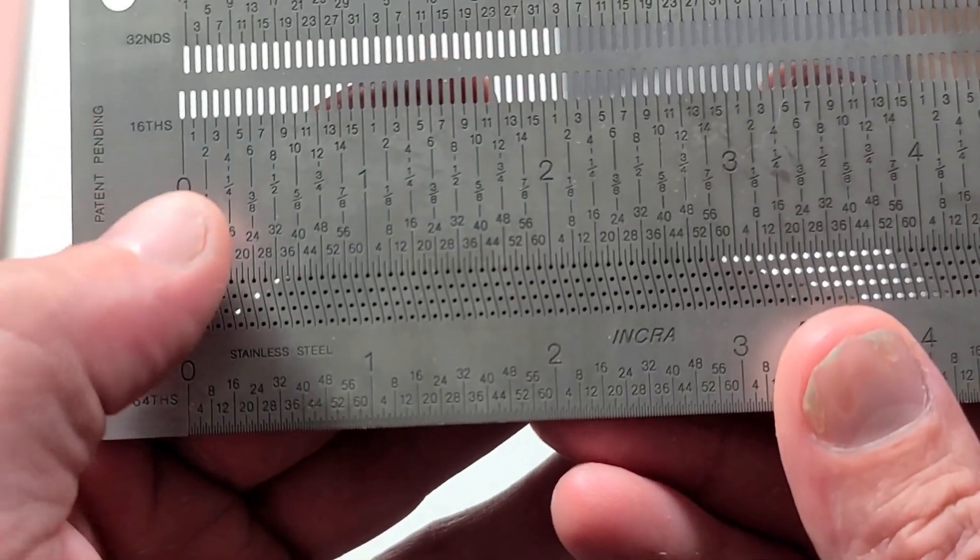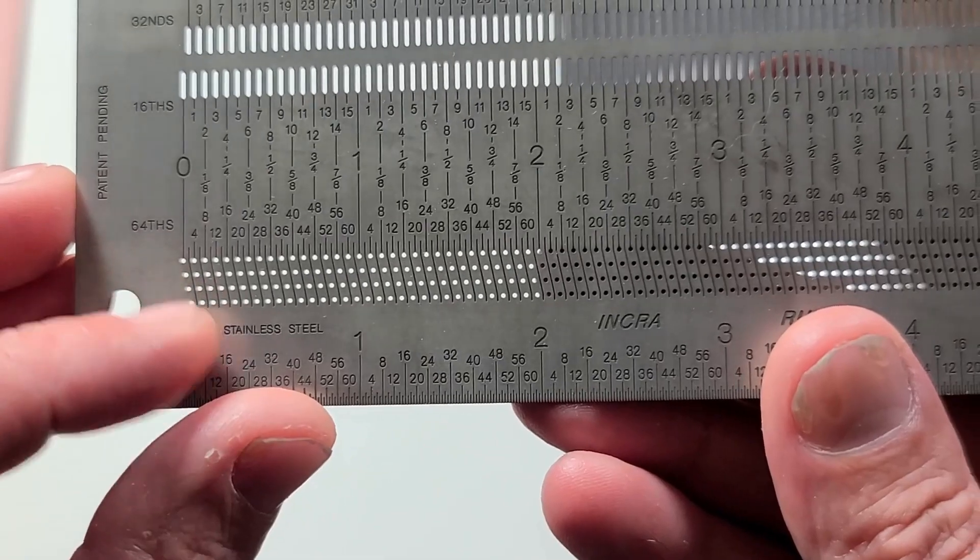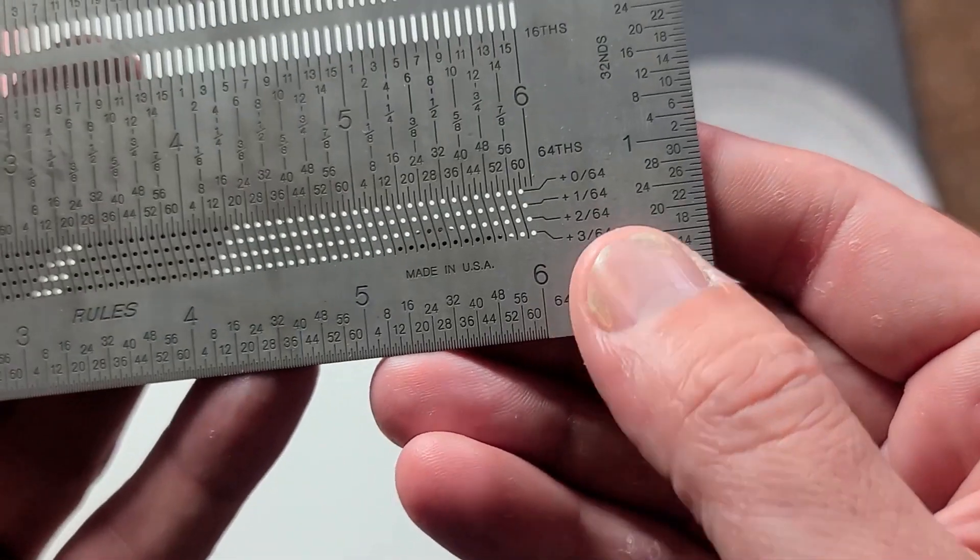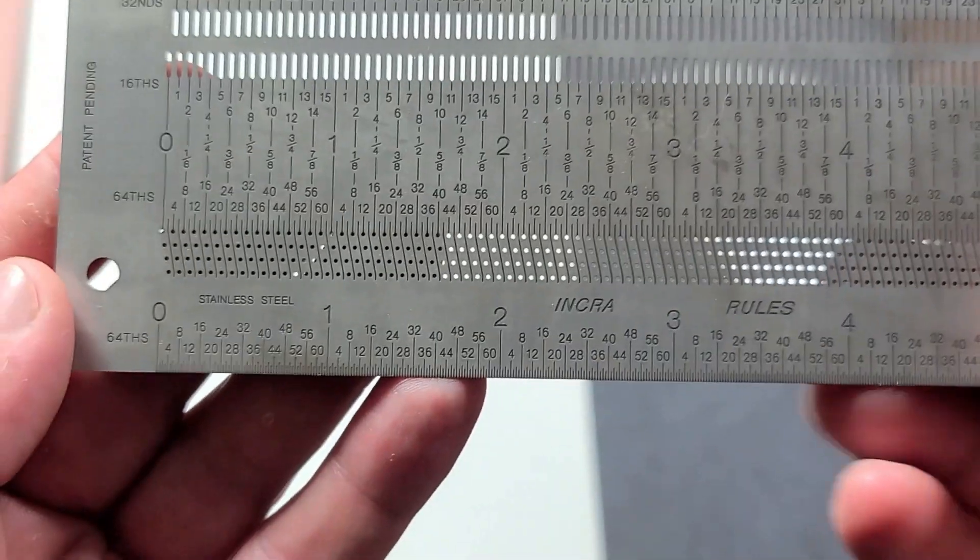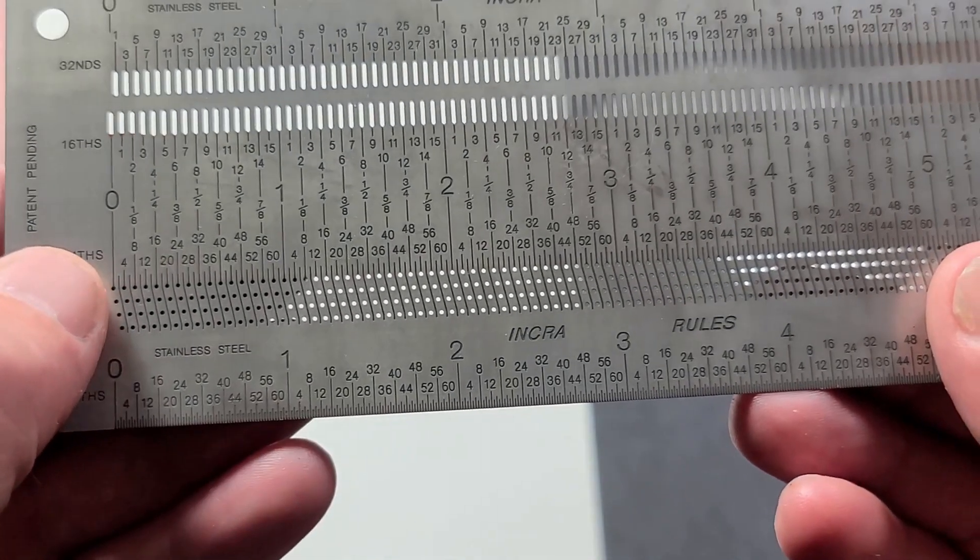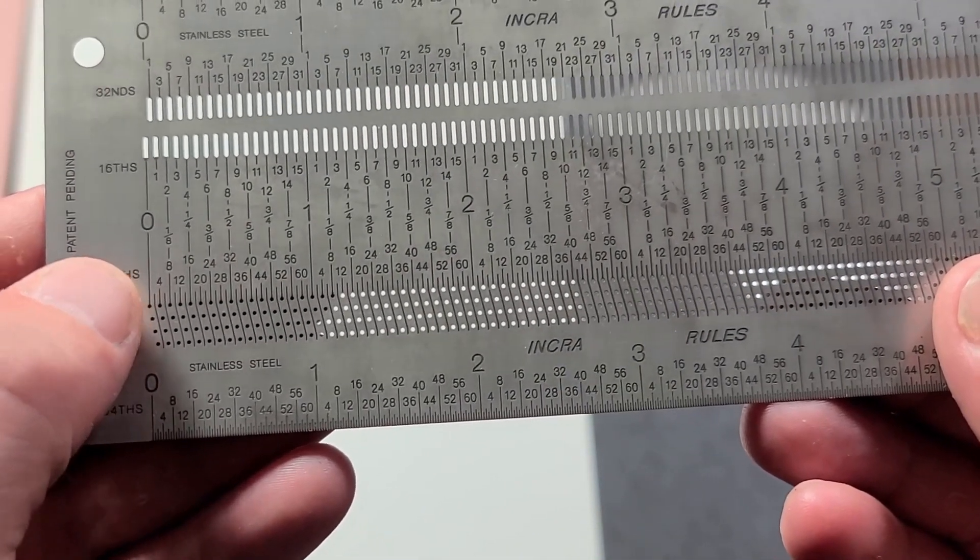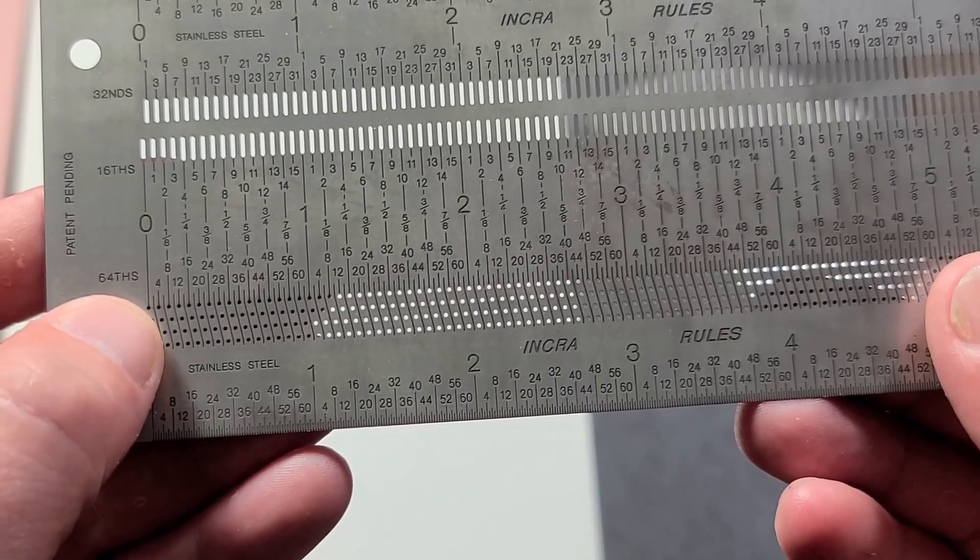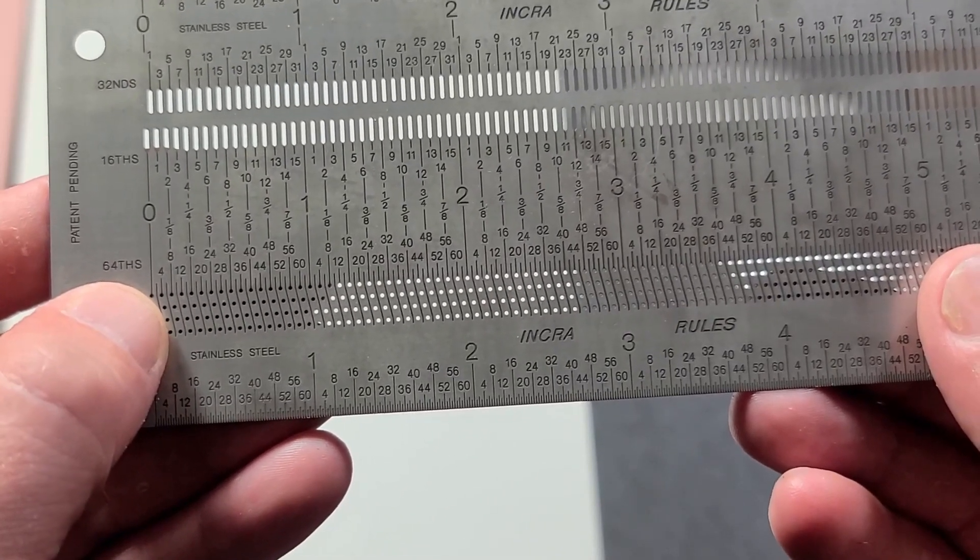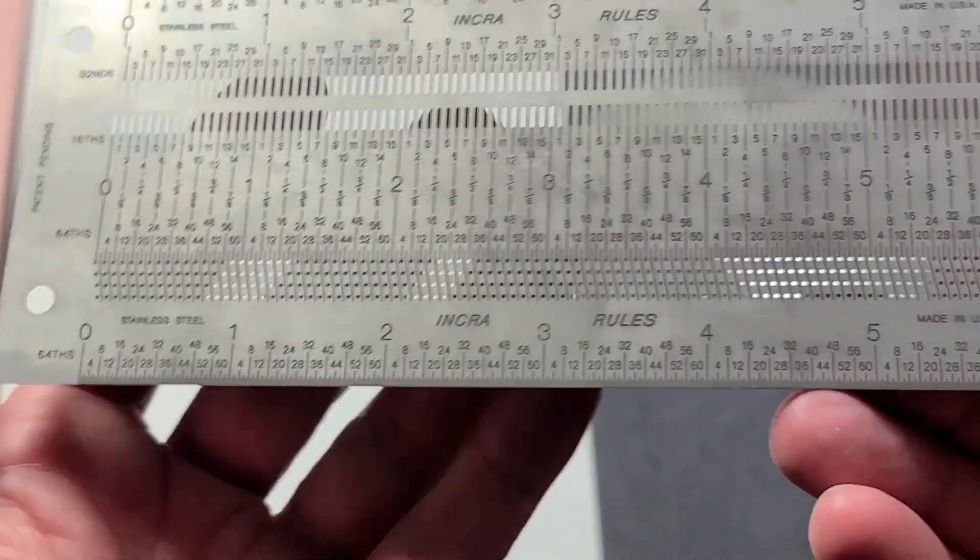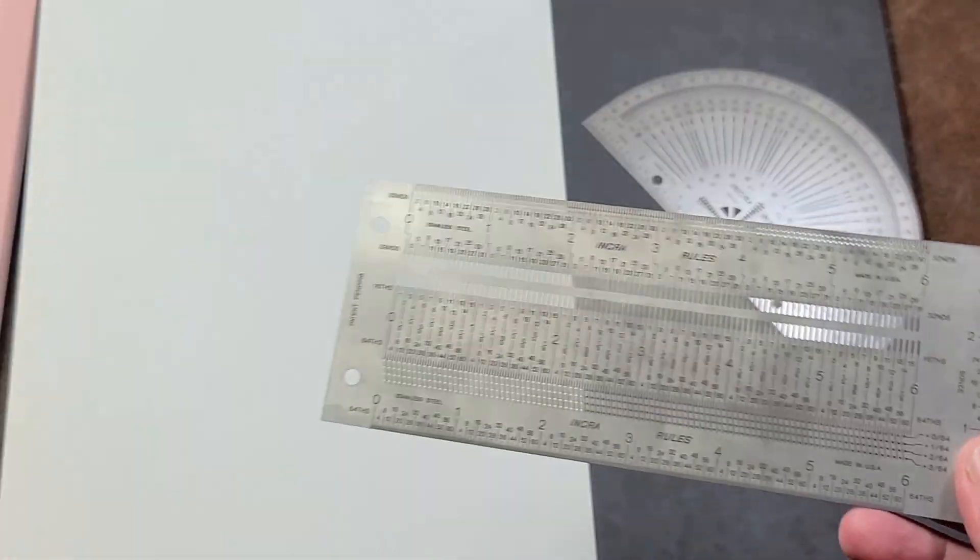It's actually pretty intelligent because you have zero and then what they do is they have these offset holes and they mark them plus 1, plus 2, plus 3 64ths. So if you're right here at say 4 64ths and you want 6 64ths, you just go down and mark that lower hole, which may be easier than counting over a couple.